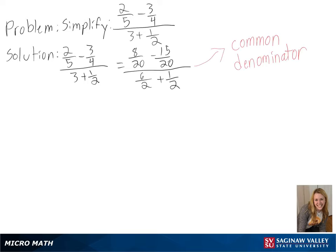Now we are able to add and subtract them, and we get negative 7 over 20 divided by 7 over 2.